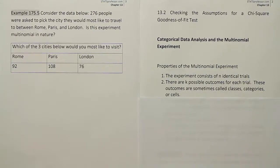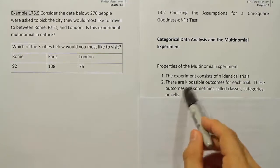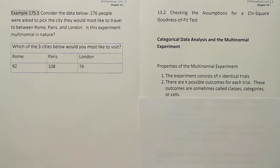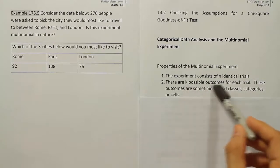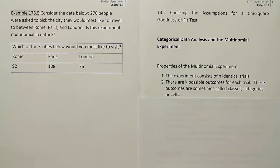So when I ask someone which city would you rather visit, they're going to respond to one of three different possible choices. Okay, so we do have k possible outcomes for each trial. In this case that k is three.